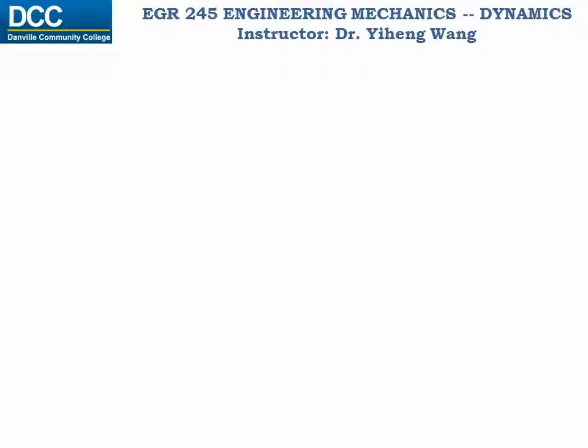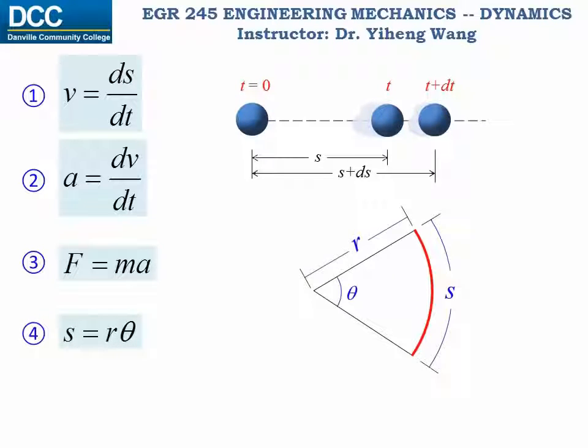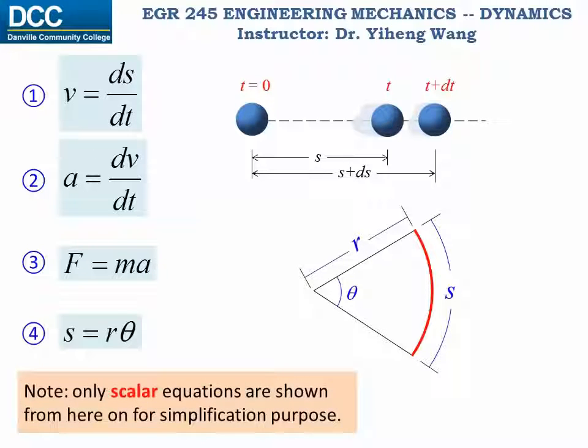As we move along with this course, it might seem to you that this course covers a lot of topics with a large number of formulas to study. It could be overwhelming. Therefore, I'd like to point out to you that, in my opinion, there are only four most fundamental formulas that you definitely should know by heart: the two kinematic equations that relate displacement, velocity, and acceleration to time, Newton's second law, and lastly, the equation that relates the length of an arc to its central angle. Note that again, only scalar equations are shown here and from here on to simplify the demonstration. We will learn the proper vector formulations later.